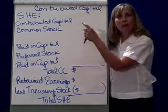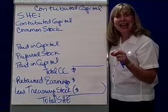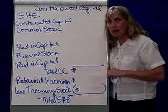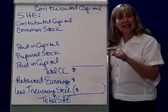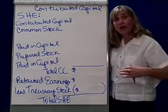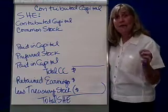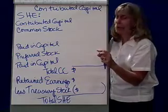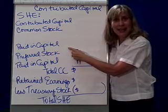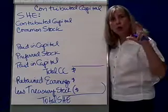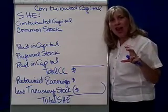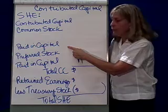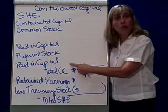Common stock and preferred stock is the number of shares outstanding times the par value. And if on the original IPO — Initial Public Offering — when the stock is first sold on the stock market, if they paid more than the par value, which commonly happens, then you might have another account called paid-in capital. So common stock plus paid-in capital gives you the value that the stock was initially sold for. Preferred stock would have the same thing — it could also have a paid-in capital account.